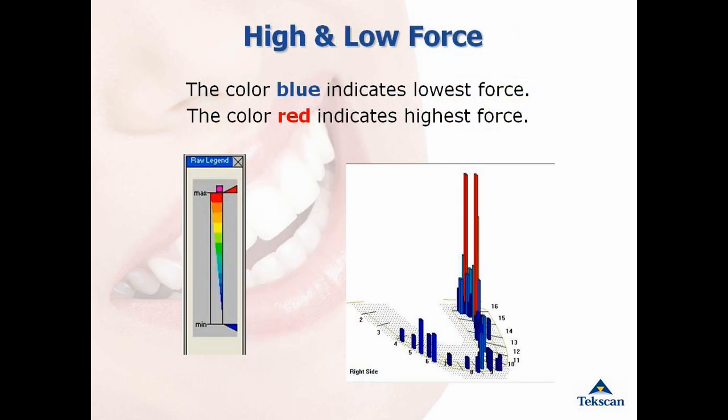The T-Scan system measures relative force. The software provides a force legend that shows the different force levels that can be graphically displayed by color coding — from lowest forces in blue, through middle forces in green and yellow, up to the highest forces in red and orange. The force legend illustrates the color coding which describes 256 levels of force that can be recorded in a given movie.